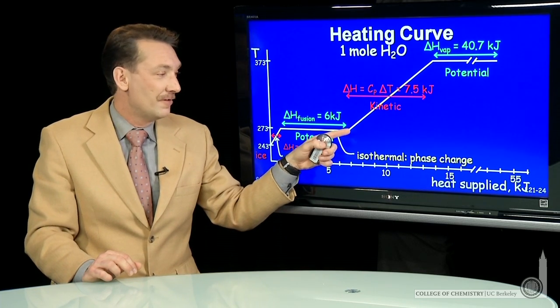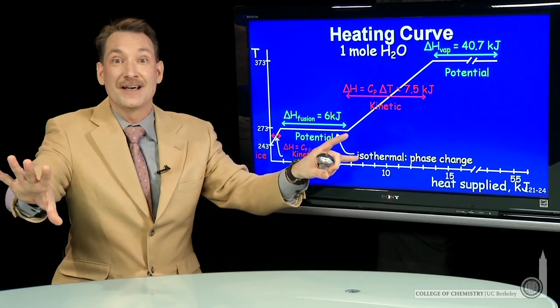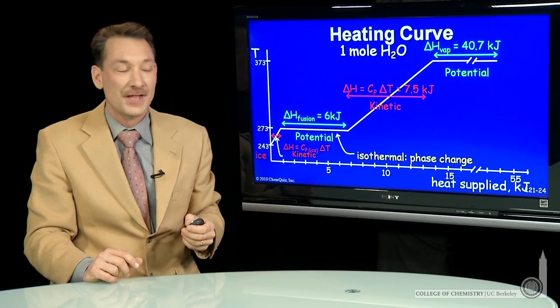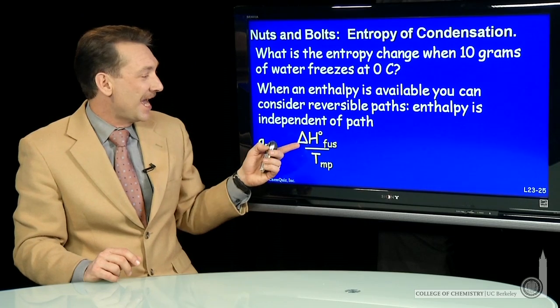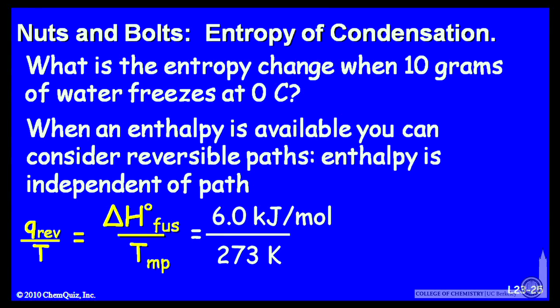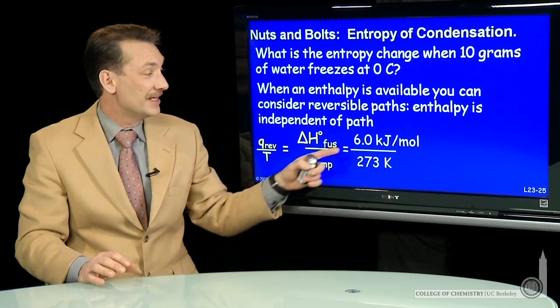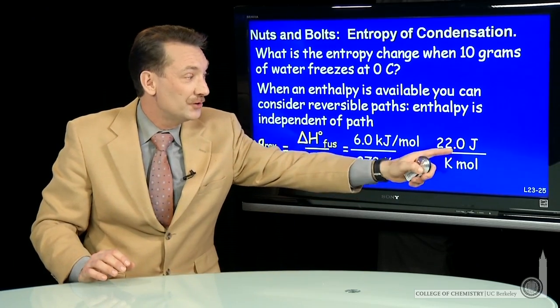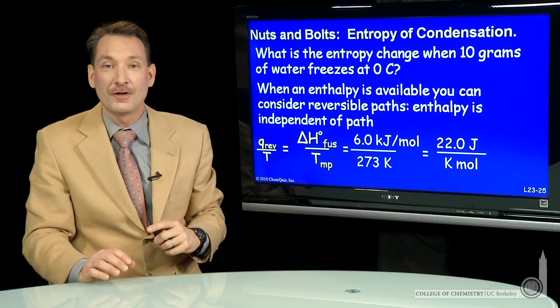So freezing requires a release of heat. So freezing is endothermic. So we can take that six kilojoules per mole over the freezing point, 273. And now I'm going to use positive six kilojoules per mole because this is evolved. This is a positive heat. And I find that that's 22 joules per Kelvin mole of water.